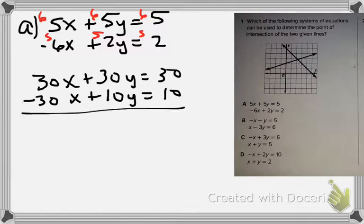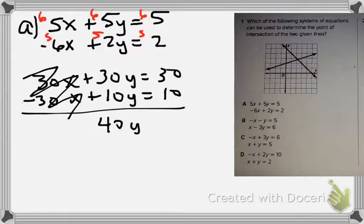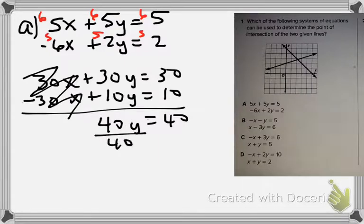When I do this, this becomes a zero pair, so I got 40y = 40. Divide both sides by 4, y is going to equal 1. Now if we look at our drawing, does y look like it equals 1? No, it does not, so we know this is not our answer.